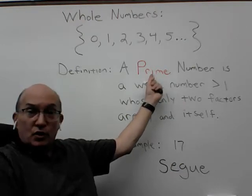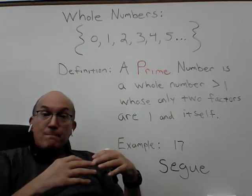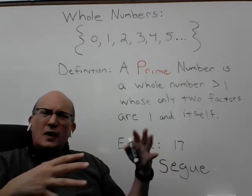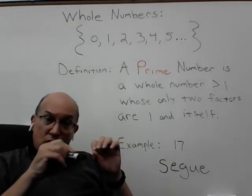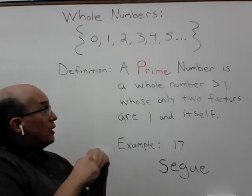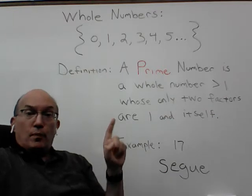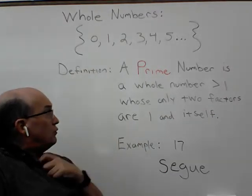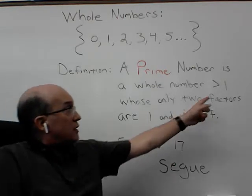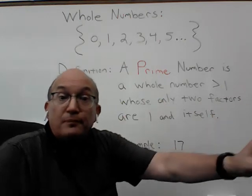Within those whole numbers, we're going to define a certain special kind: a prime number. Here is how I articulate the definition — the idea is the same worldwide, though there are a few different ways to phrase it in English. A prime number is a whole number greater than one whose only two factors are one and itself. That's the definition. We're going to talk about why we say a prime number has to be a whole number greater than one.